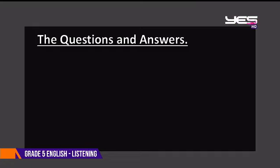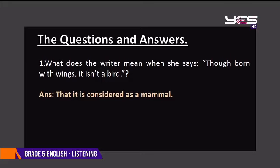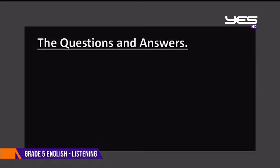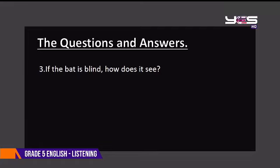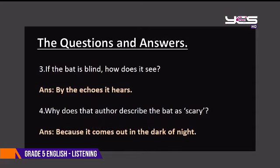Let me discuss the answers now. Question one: what does the writer mean when she says 'though born with wings, it isn't a bird?' The answer is that it is considered a mammal. Number two: where does the bat stay during the daytime? The answer is in the caves. Number three: if the bat is blind, how does it see? The answer is by the echoes it hears. Number four: why does the author describe the bat as scary? The answer is because it comes out in the dark of night.